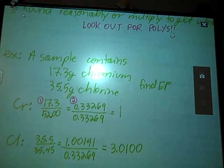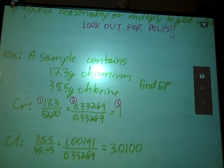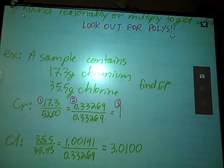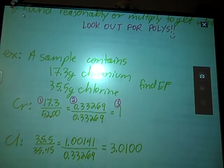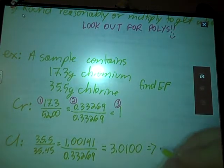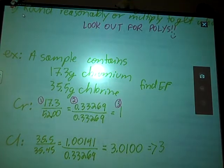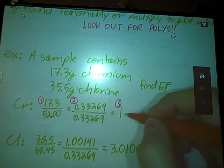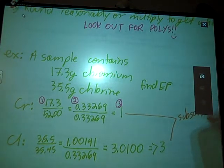All right, so step three tells us to round reasonably or multiply if we get something between 0.3 and 0.7. This guy, I don't have to round. It just has a one. This one, I can round to just a three. It's just a smidge over three, so that's all good. These numbers here, these are your subscripts.